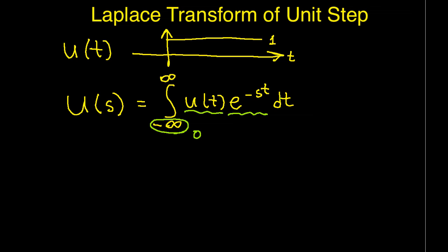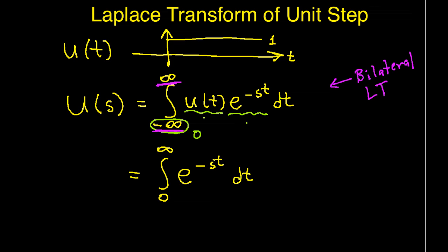So the product of U(t) and e to the minus s t is 0 for values of t less than 0. For t greater than 0, U(t) is 1, and I have just the integral of e to the minus s t. As an important side note, the integral I've defined here is the bilateral Laplace transform. When I take into account the fact that the unit step function is 0 for values of t less than 0, I end up having a unilateral Laplace transform, because the limits are from 0 to infinity.